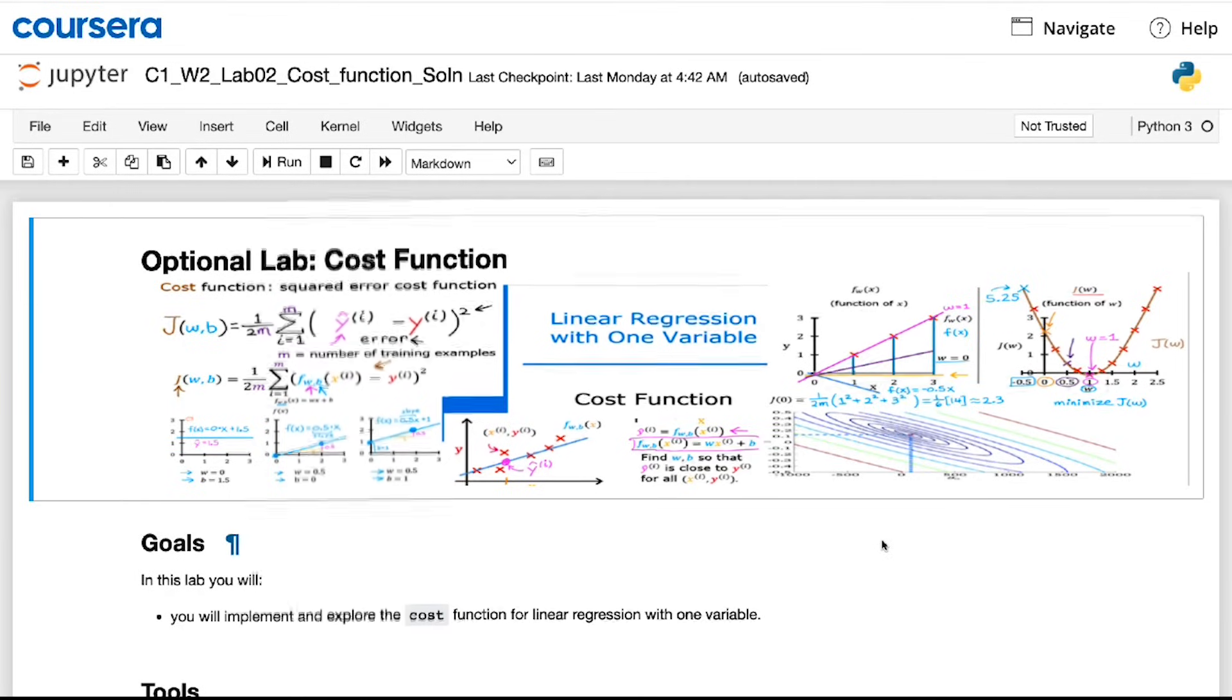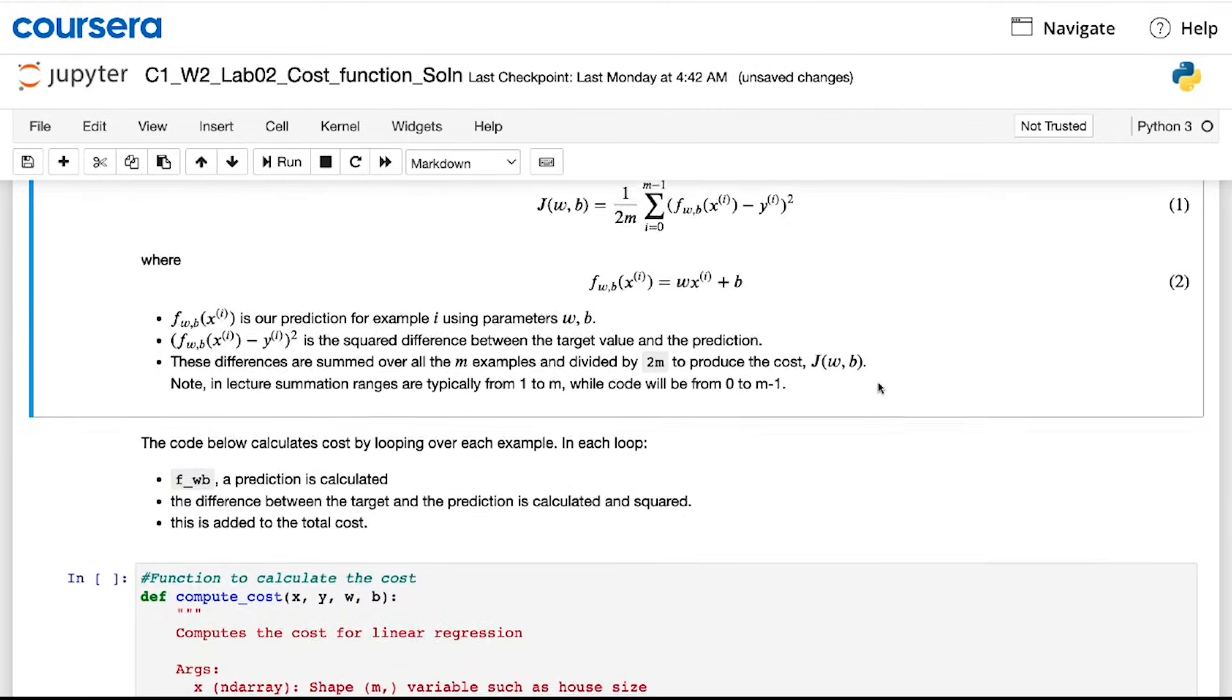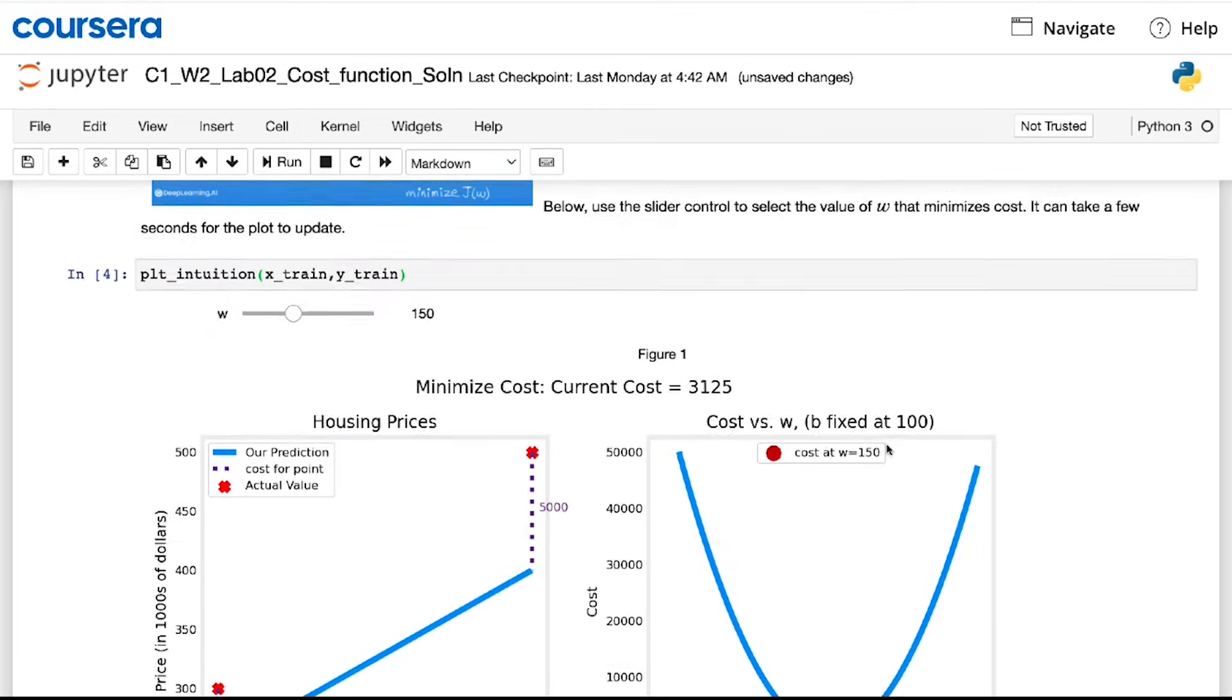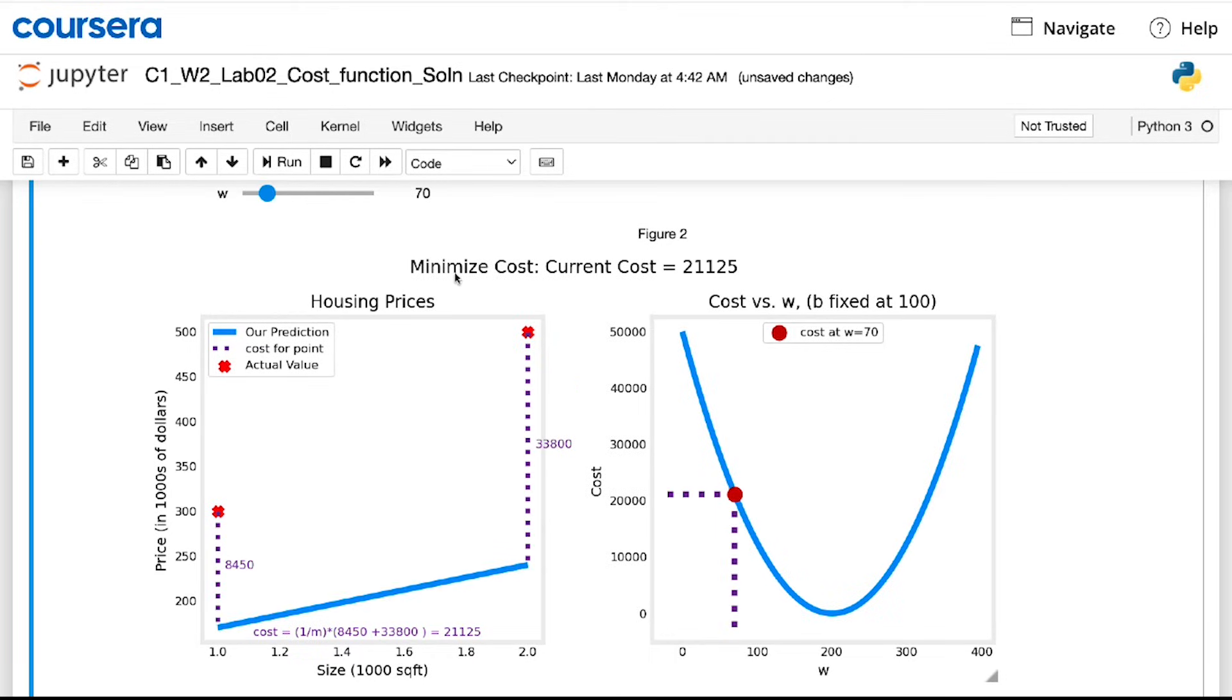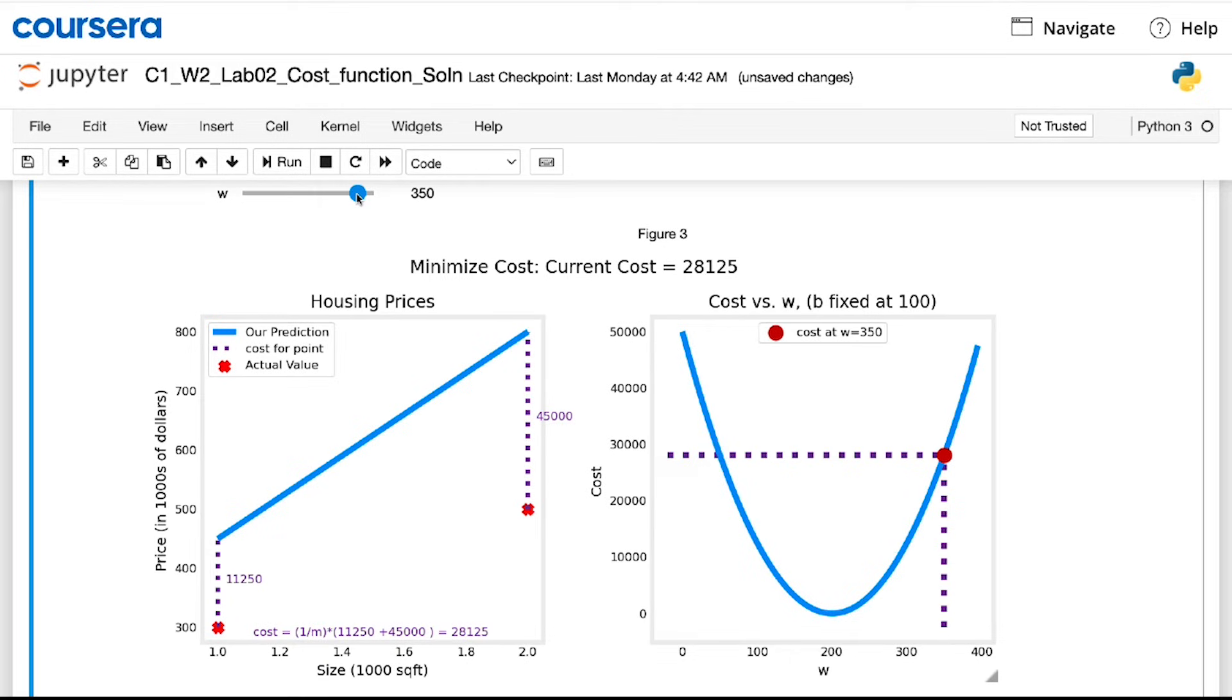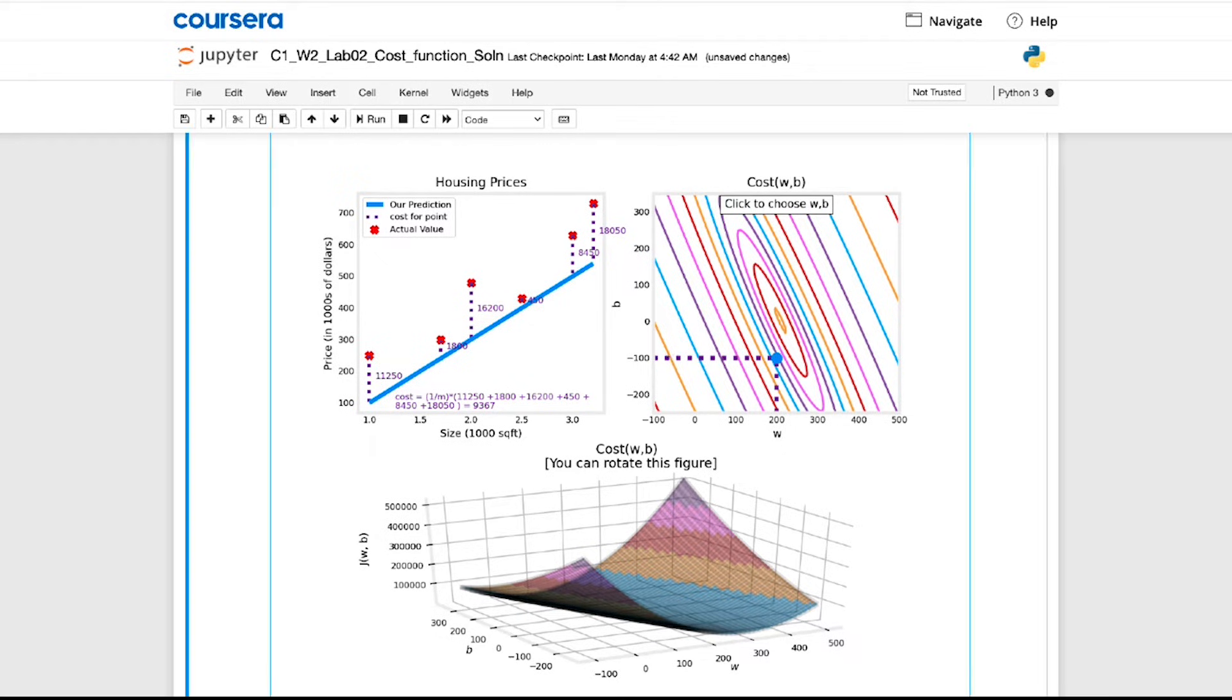In the optional lab that follows this video, you get to run some code. And remember, all of the code is given, so you just need to hit shift enter to run it and take a look at it. And the lab will show you how the cost function is implemented in code. And given a small training set and different choices for the parameters, you'll be able to see how the cost varies depending on how well the model fits the data.